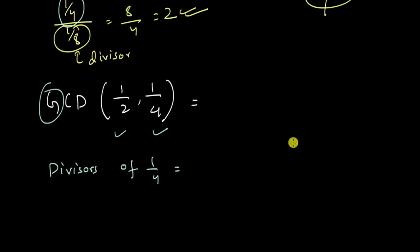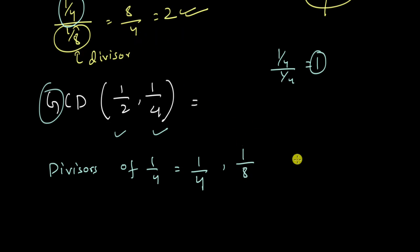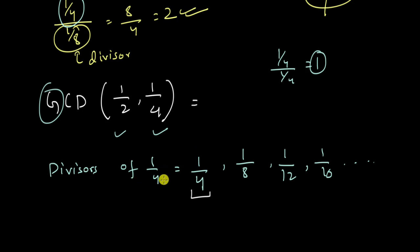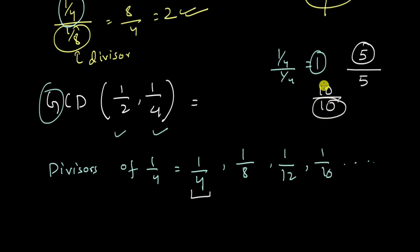For 1/4, we know that 1/4 is one of its divisors, because if we divide 1/4 by 1/4 we get 1, which is an integer. We just saw that 1/8 also divides 1/4 evenly, so it is also a divisor. Similarly, 1/12, 1/16 — these are all divisors of 1/4, and we can see that these go on decreasing. So 1/4 is the greatest divisor of 1/4. Just like with integers — the greatest integer that can divide 10 evenly is 10 itself.